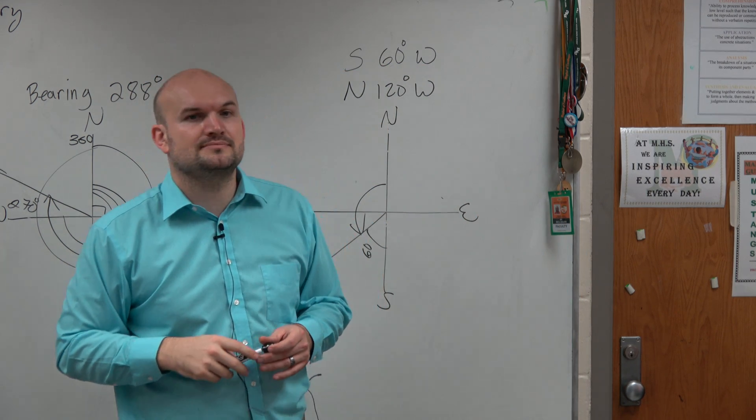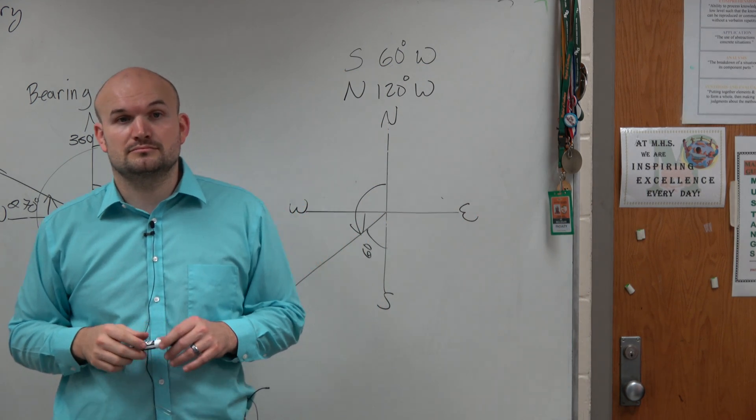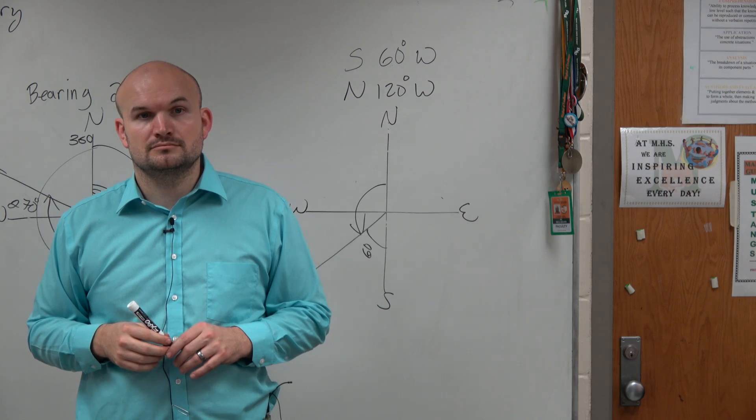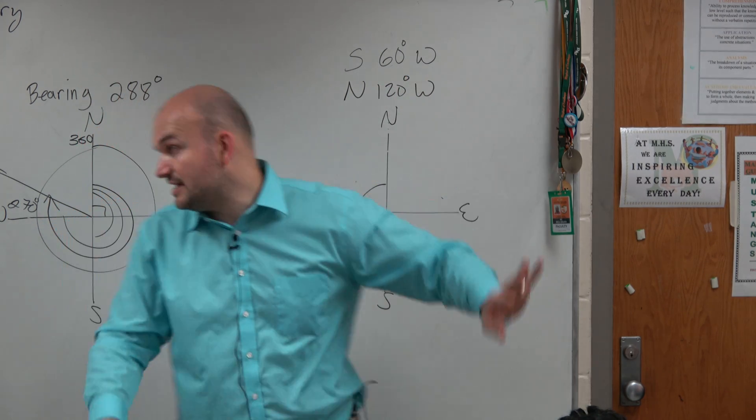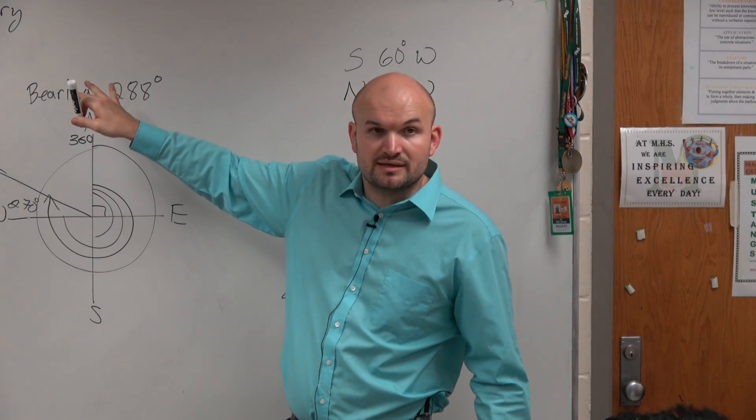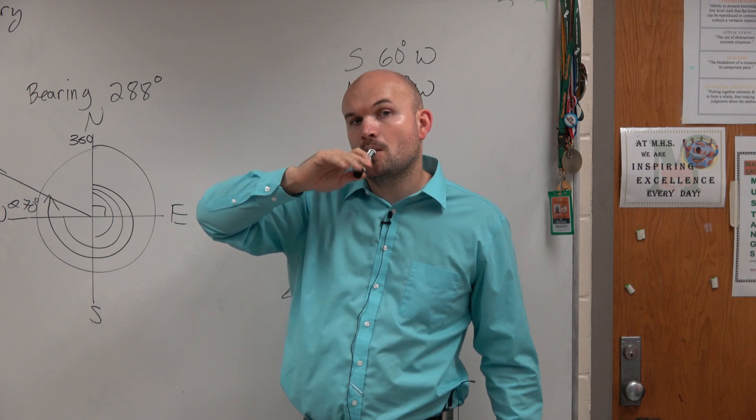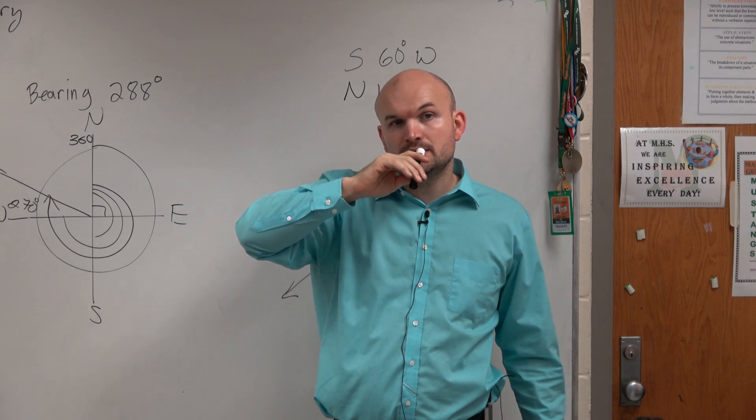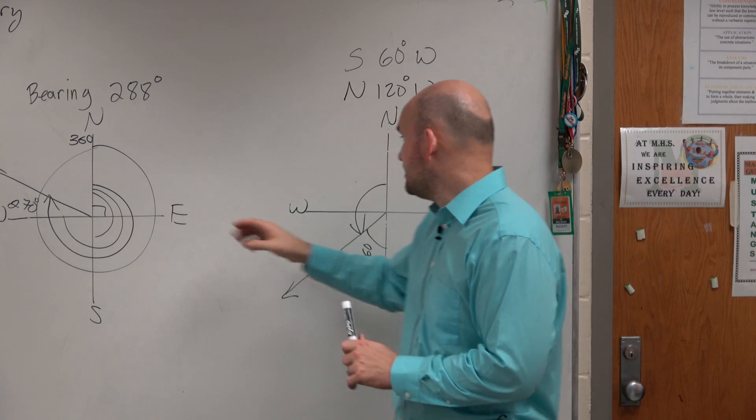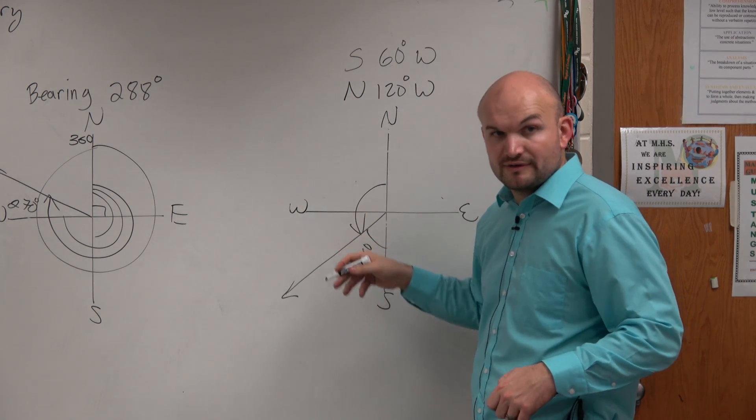Yes? With the bearing problem, do we label it the same as if we had, like? You'll see them in both ways. You'll see them like this, and then you'll see a bearing of 288. Well, I mean, like, after we draw it or whatever, do you want us to put the direction? The direction still remains. I mean, you still show the direction of everything.